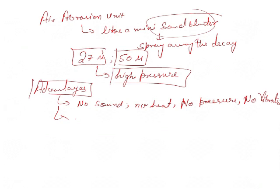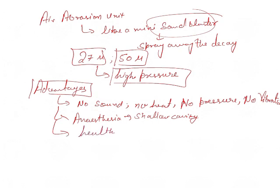The second advantage is that air abrasion reduces the need for anesthesia — anesthesia is not required, especially for shallow cavities. Also, air abrasion leaves healthier tissue behind. There is no frictional damage or heat damage to the vital tissue, since it simply strikes away the decayed part from the enamel surface.